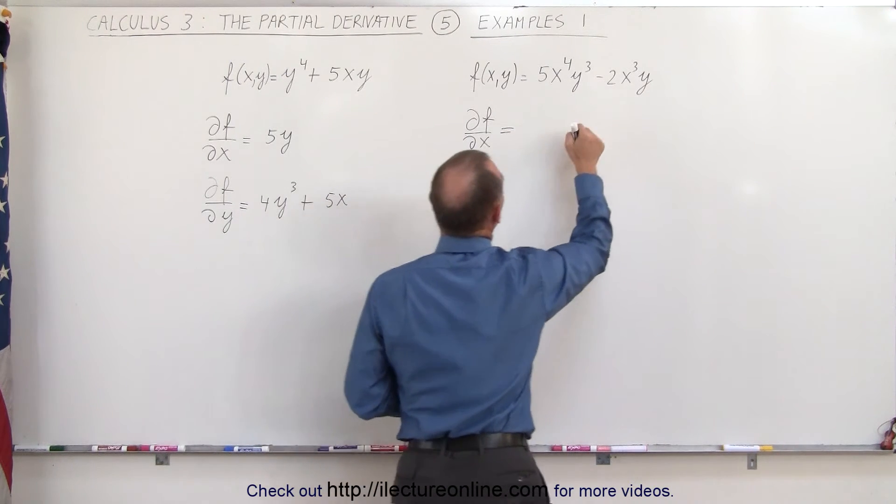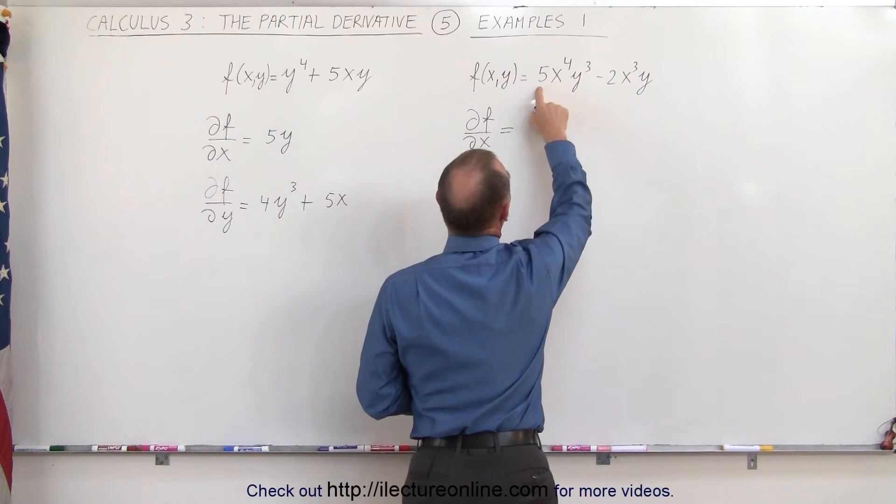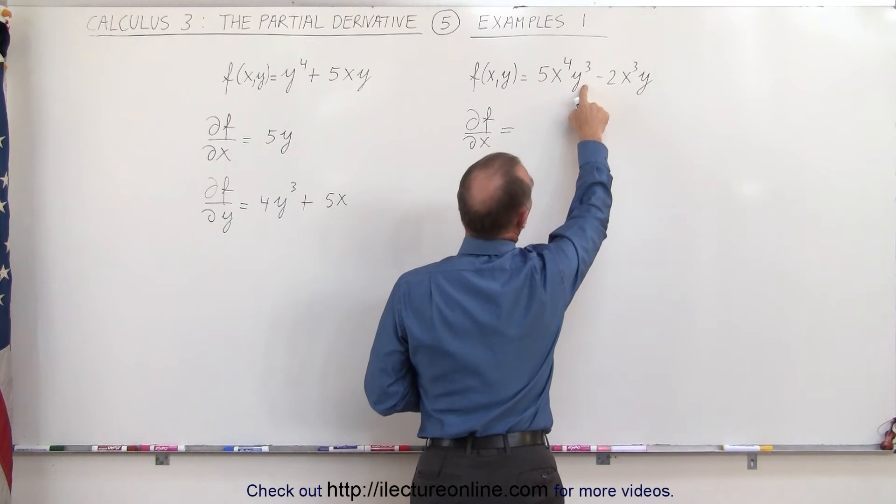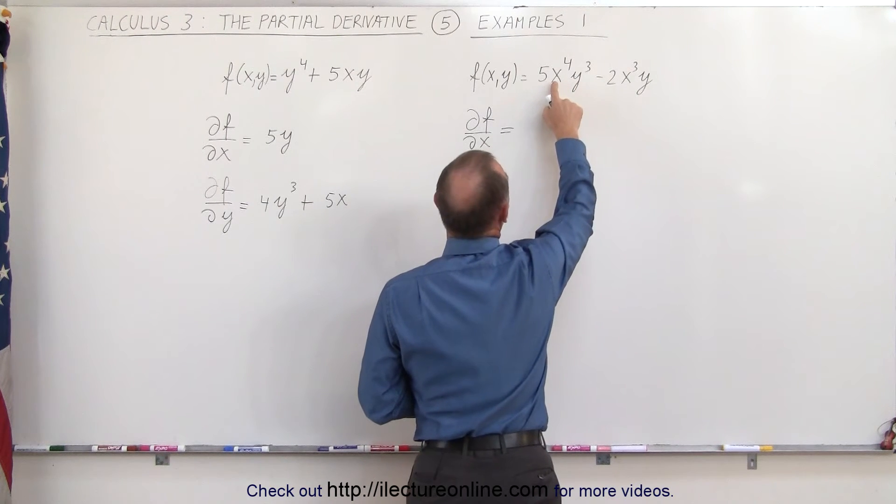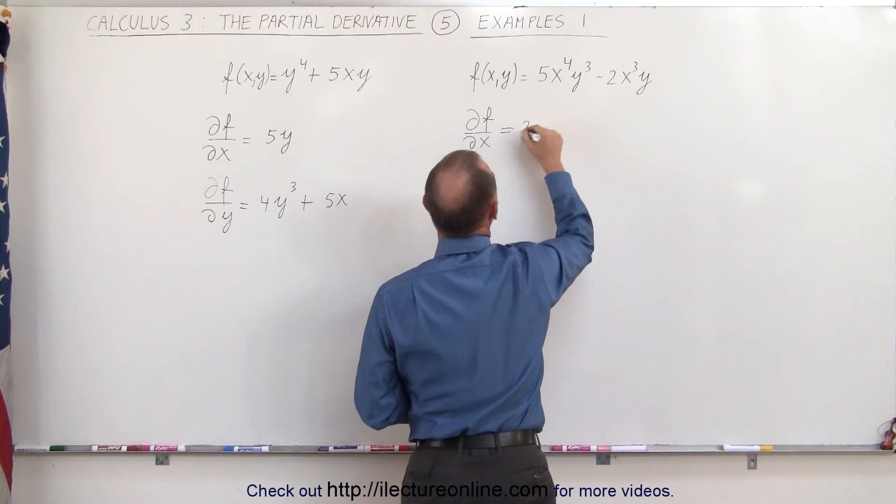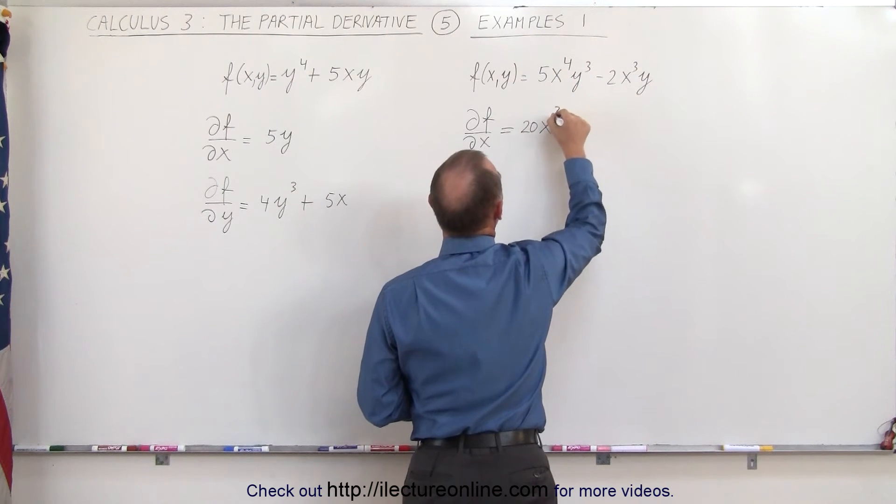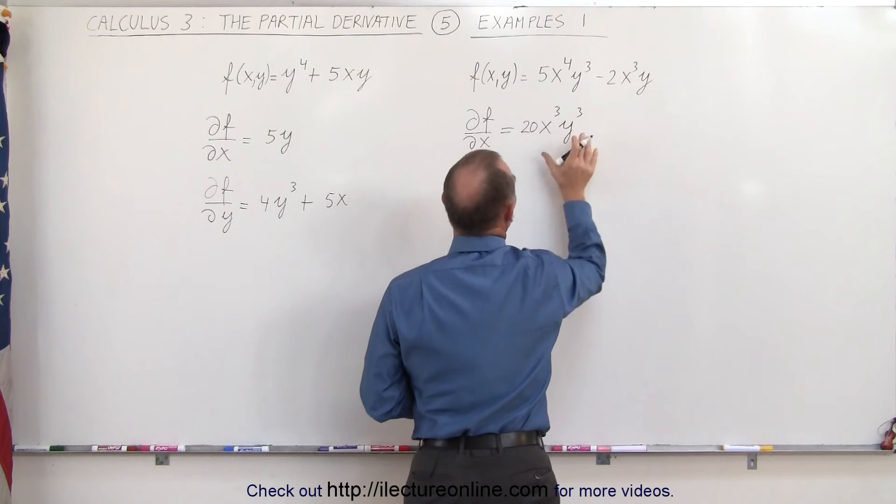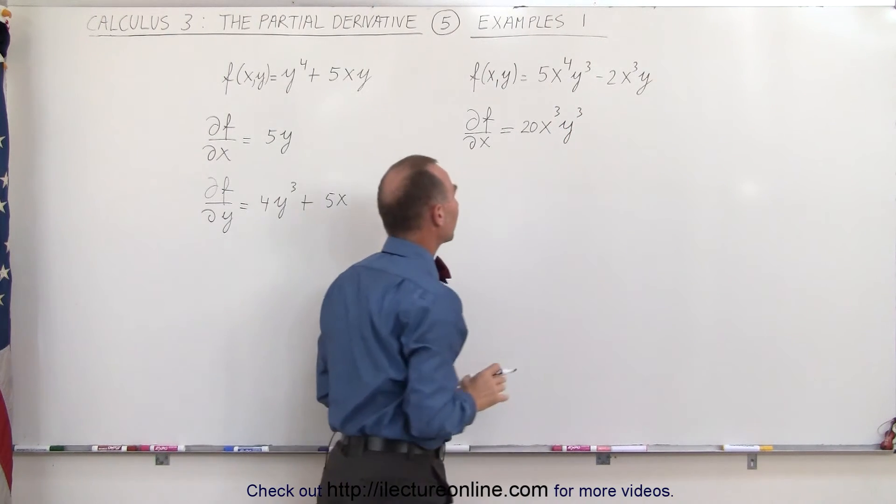And here we have x is the variable, 5 and y cubed are the constants, so we take derivative of x to the 4th, which is 4x cubed. 4 times 5 is 20, x to the 3rd power, and y to the 3rd power remains the same because that's considered a constant in this case.